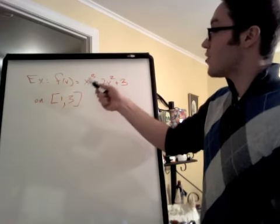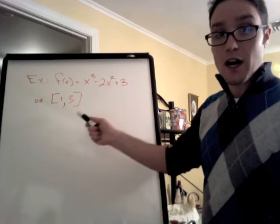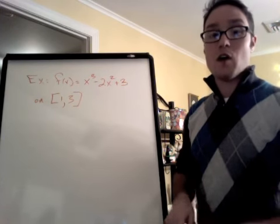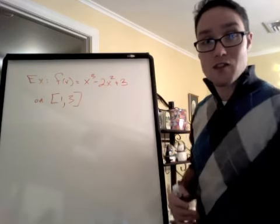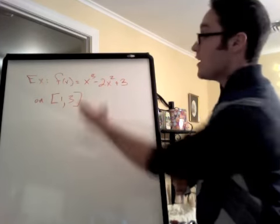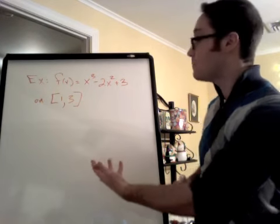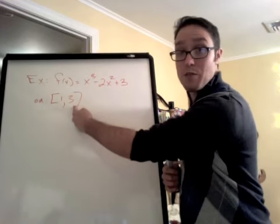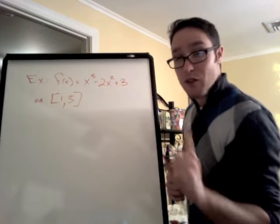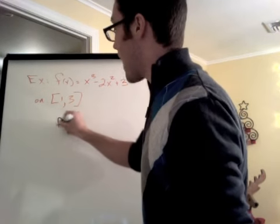We need an example. Here's my example. f(x) = x³ - 2x² + 3 on the closed interval [1,3]. So I need to check, is it continuous? It's a polynomial. There's no denominator, so yes, it's continuous. Does it have a derivative at every point? Yeah, if I take the derivative, it's a polynomial also, so it's still defined at every point. And I don't have to check the third thing. I don't have to check if f(a) equals f(b) because this isn't Rolle's theorem. This is the mean value theorem.